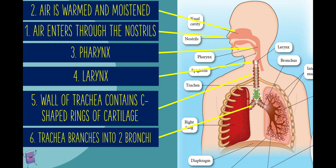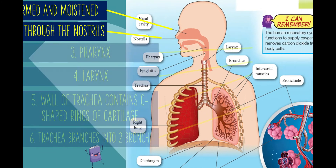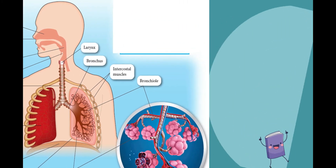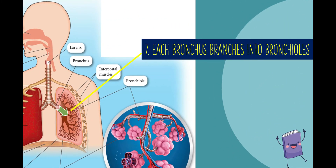The trachea branches into two bronchi. One bronchus enters the right lung, and the other one enters the left lung. Each bronchus branches into small tubes called bronchioles.